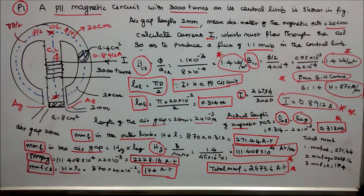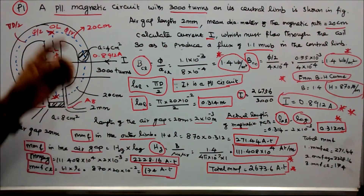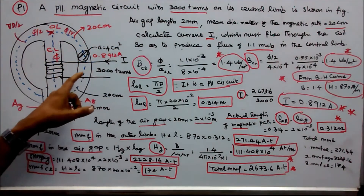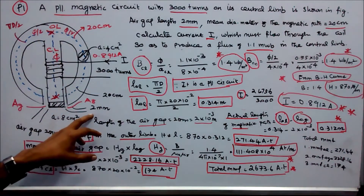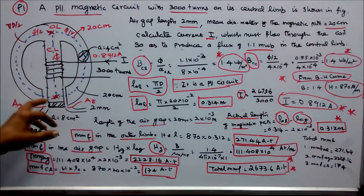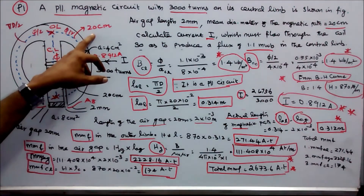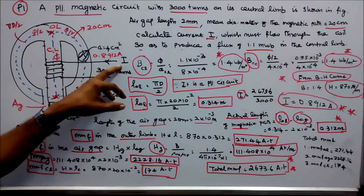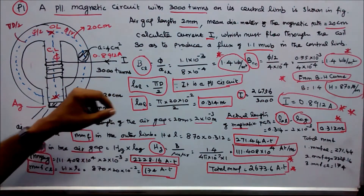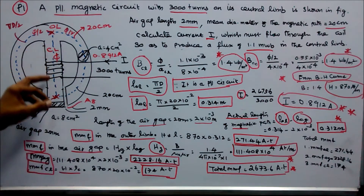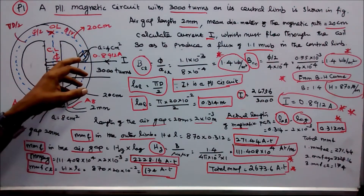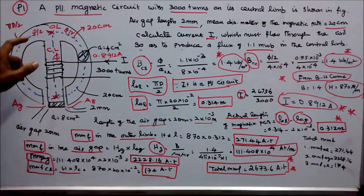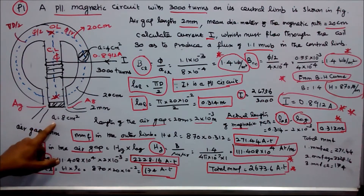We have 5 problems in parallel magnetic circuits. Problem number 1: a parallel magnetic circuit with 3000 turns in its central limb is shown in figure. The air gap length is 2 mm. The mean diameter of the magnetic path is 20 cm. Calculate the current I which must flow through the coil to produce a flux of 1.1 milliwebers in the central limb. The cross-sectional area of the outer limb is 4 cm² and the central limb is 8 cm².